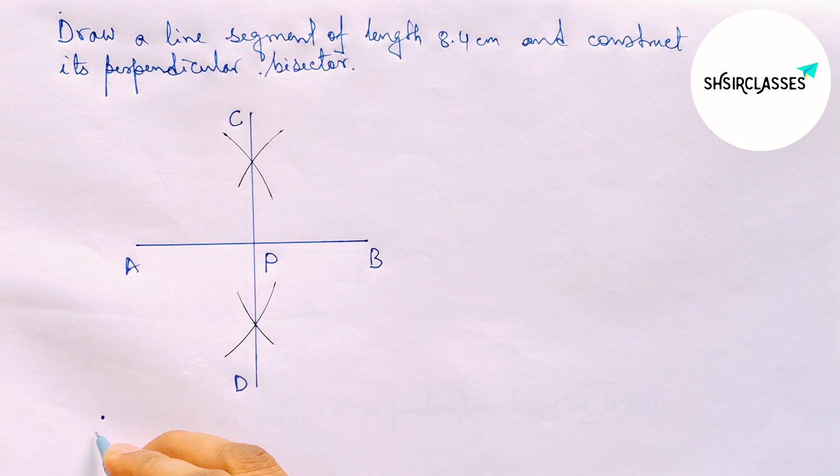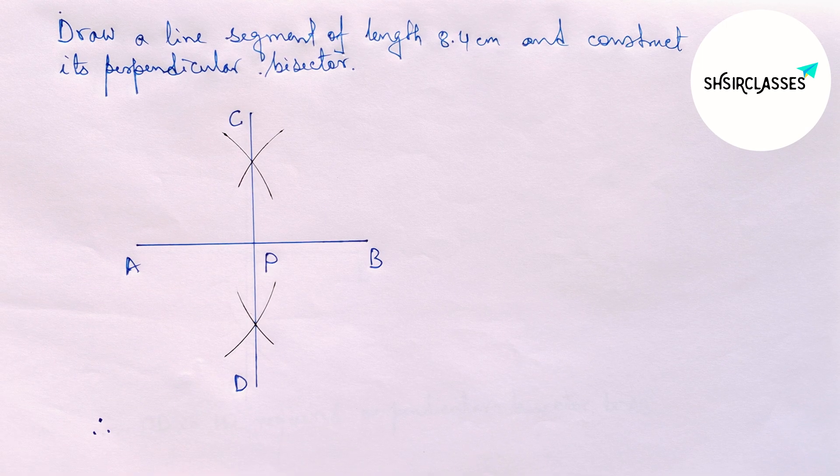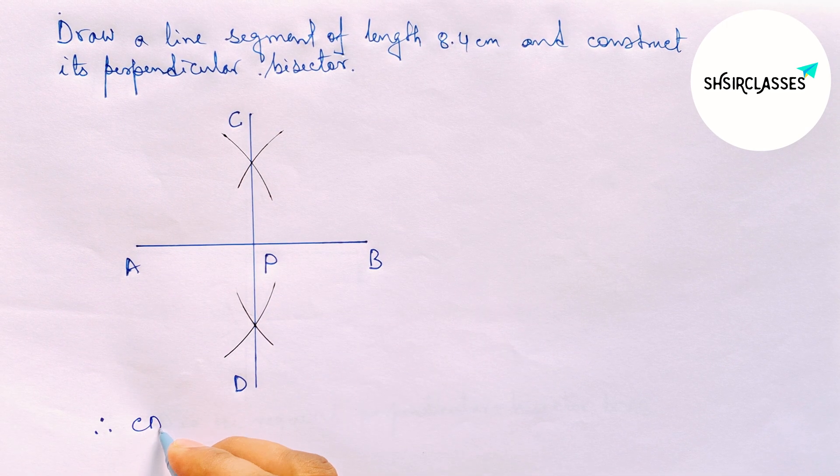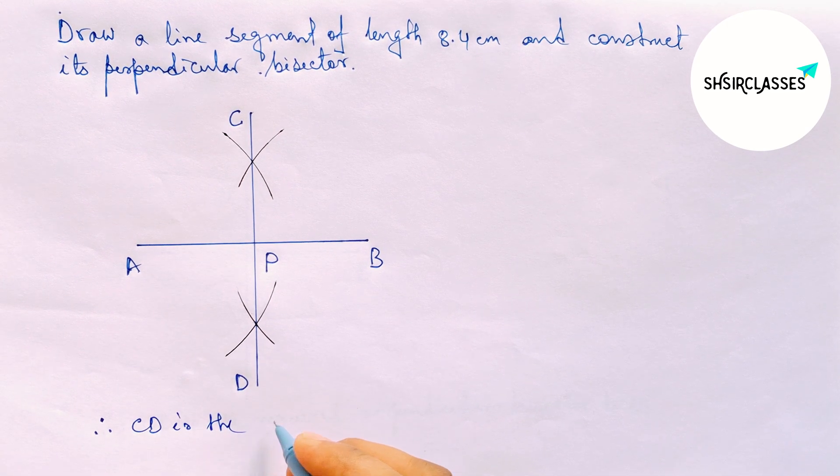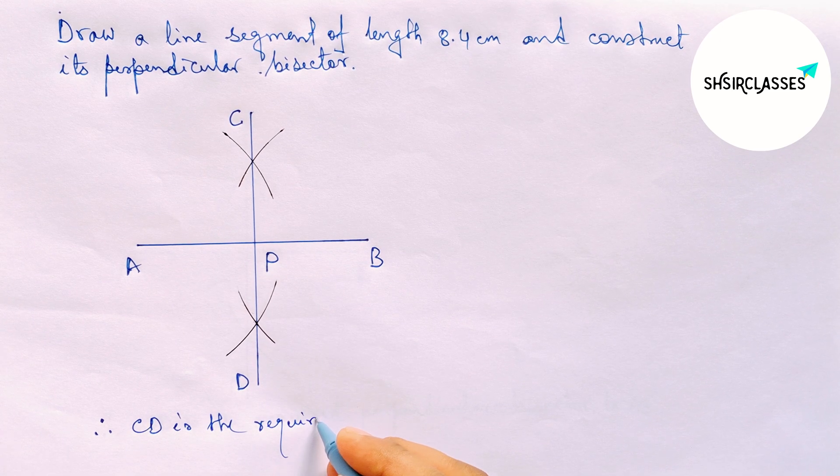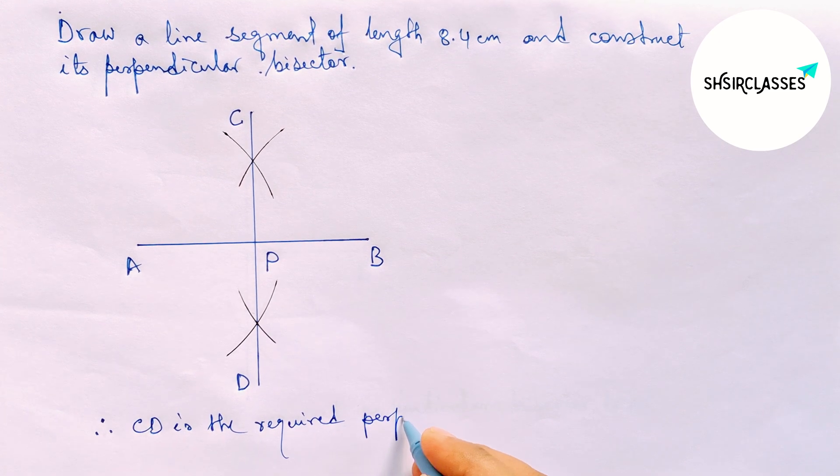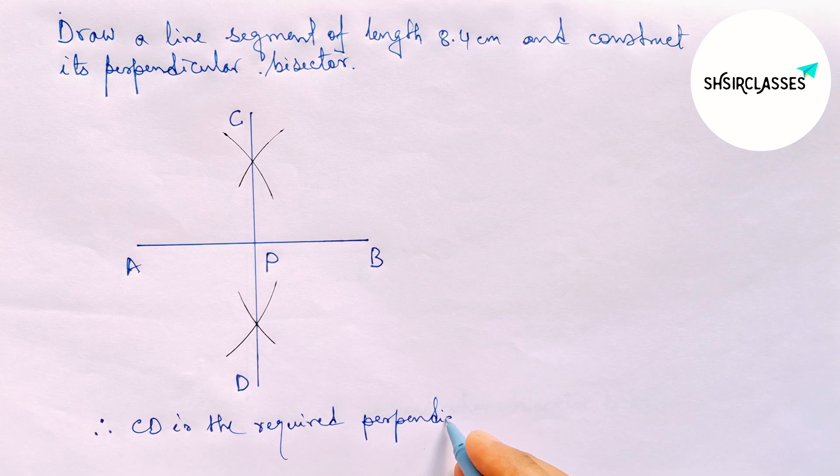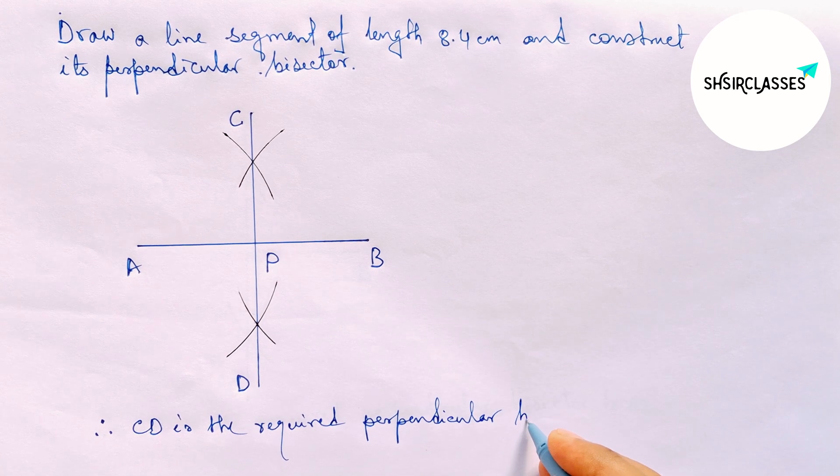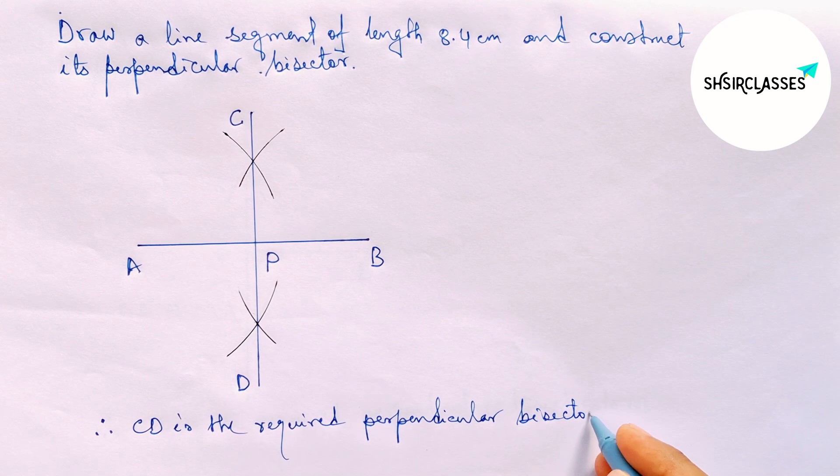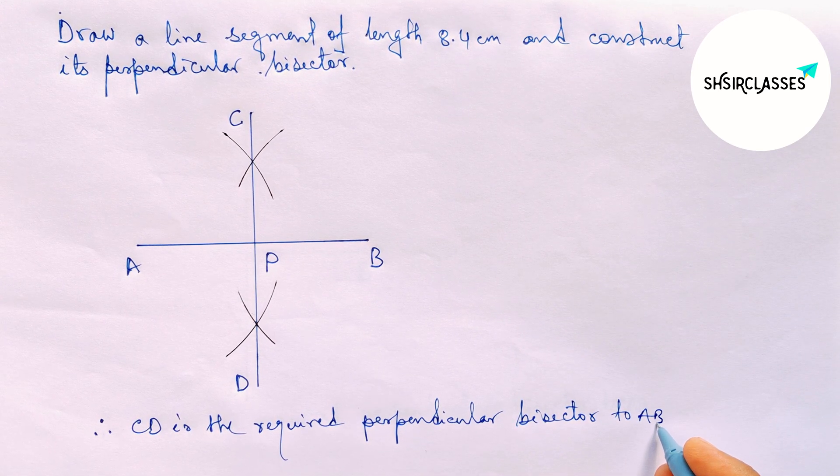Taking here point P. Therefore, CD is the required perpendicular bisector to the line AB equal 8.4 cm and by this way, you can construct a perpendicular bisector to a given line in easy way.